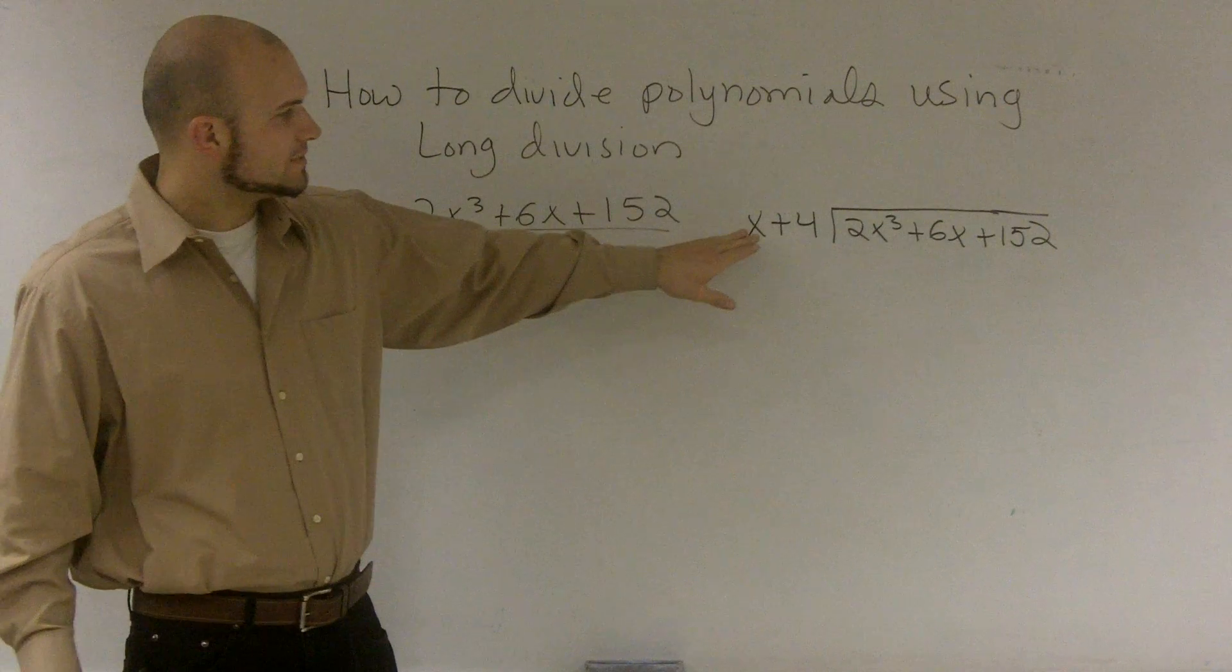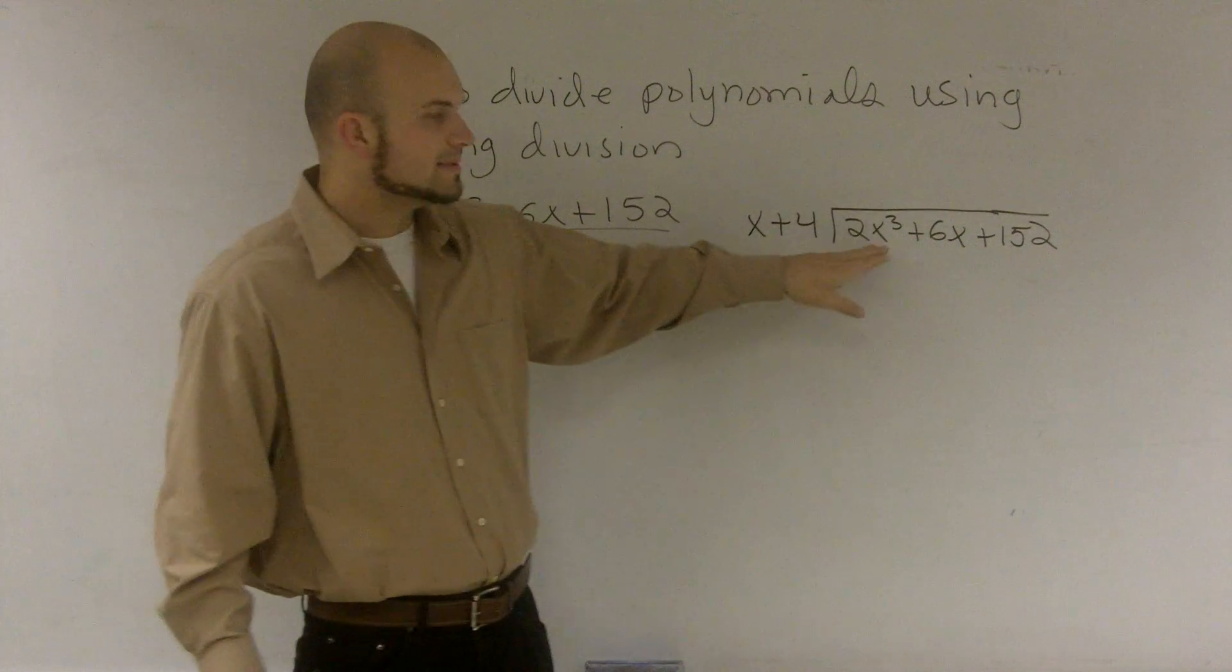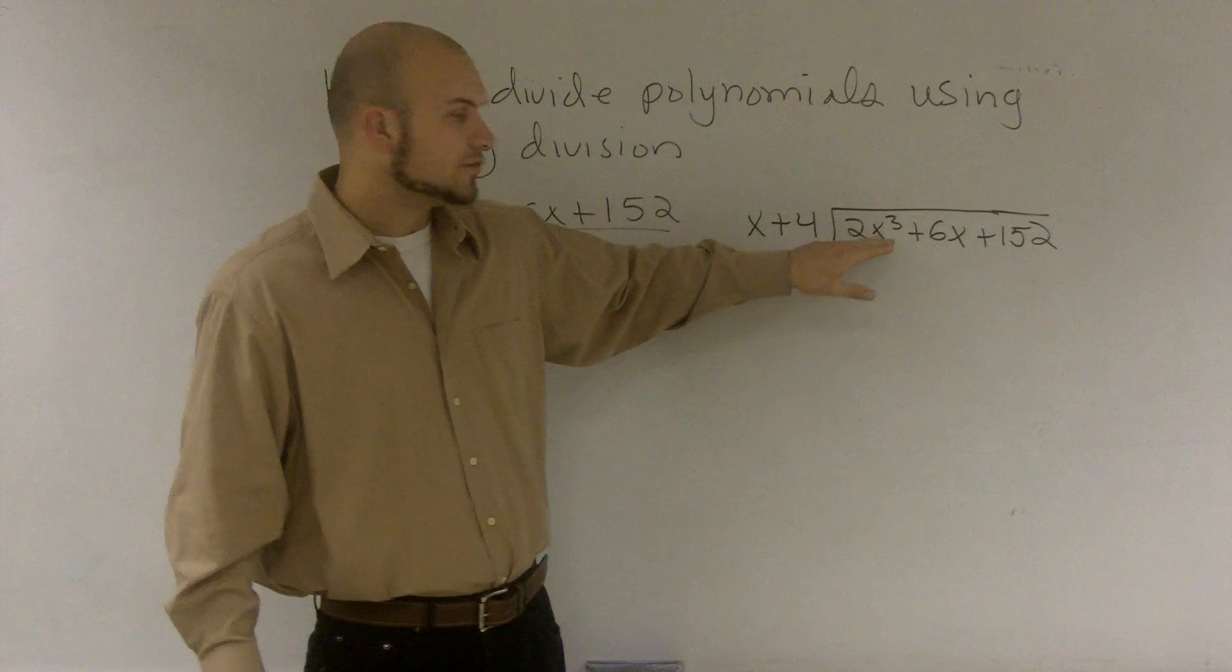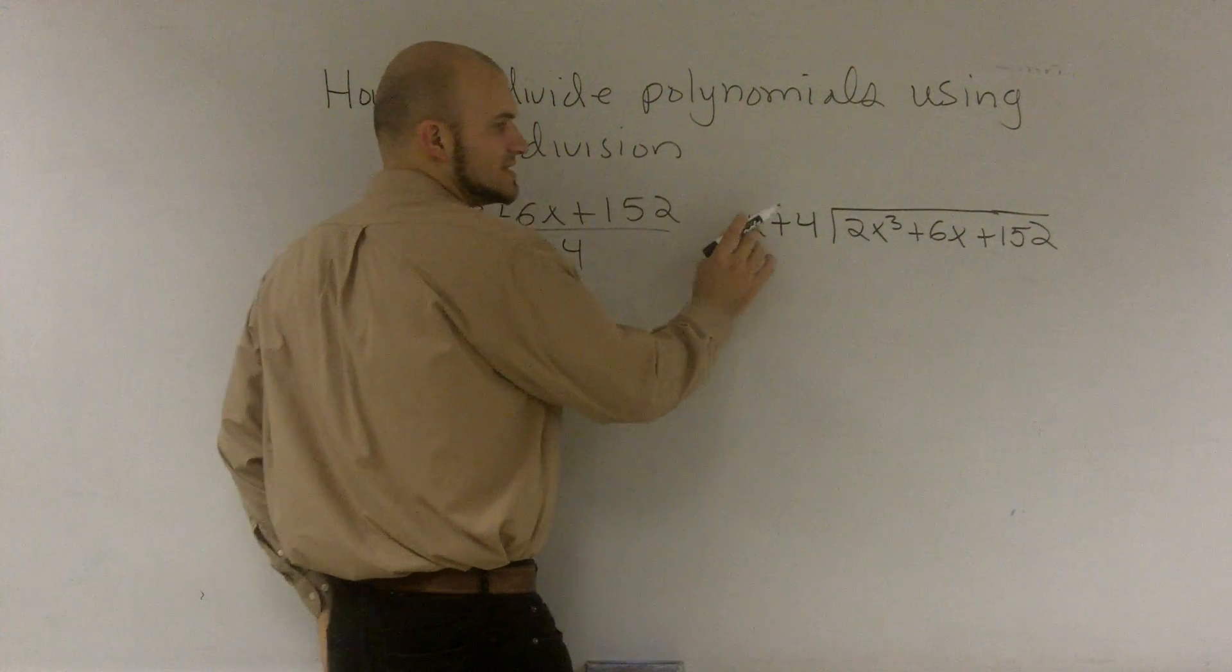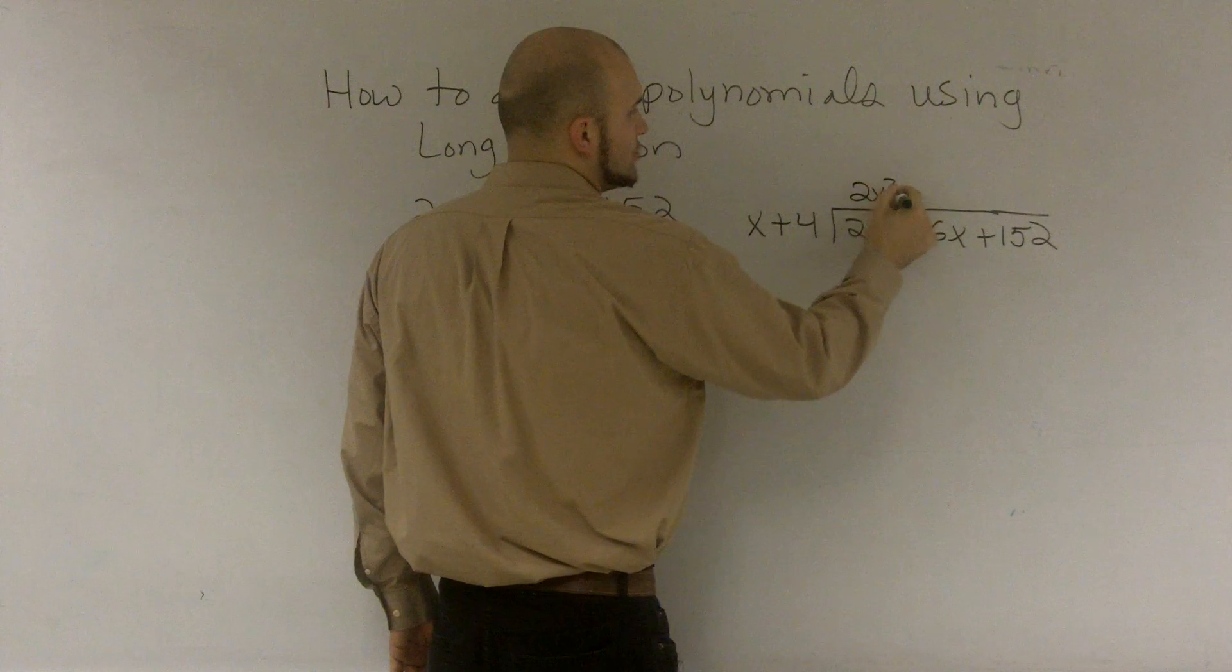So what we're going to do is we're going to take the first term of our binomial and we're just going to say how many times this is going to go into our first term of the trinomial. And you can say, well, x goes into 2x cubed, 2x squared.